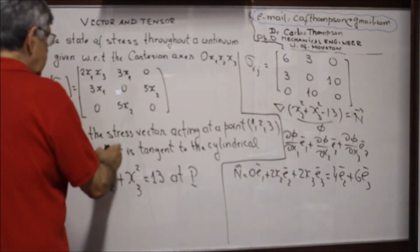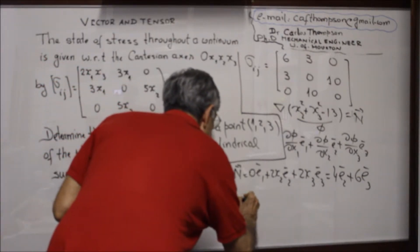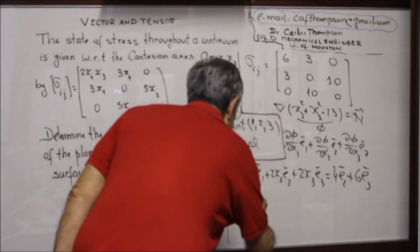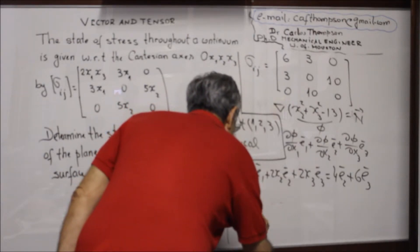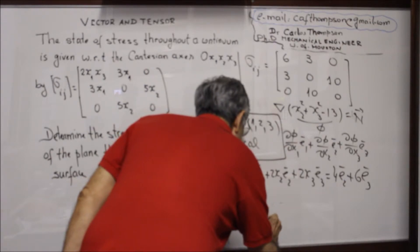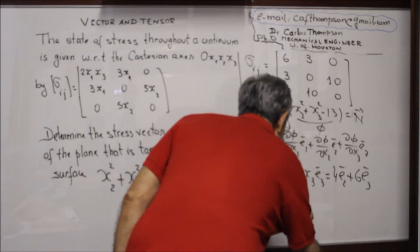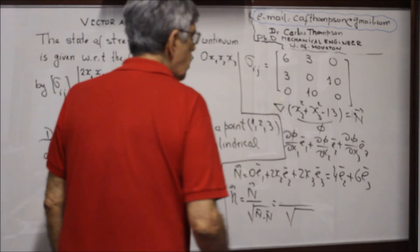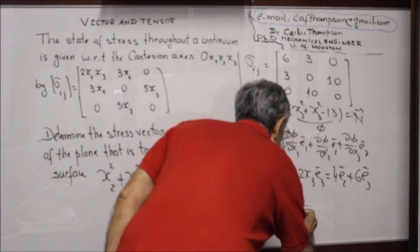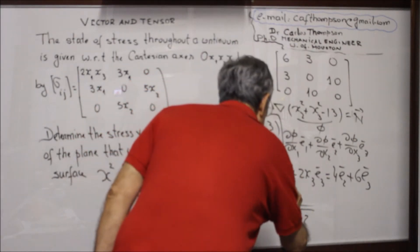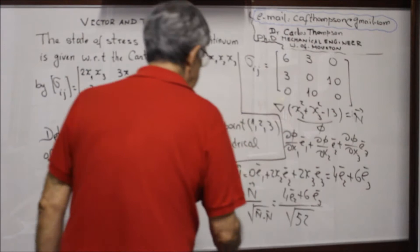To calculate the stress vector, we need the unit normal. The unit normal n̂ = n / √(n·n). Here n·n = 4² + 6² = 16 + 36 = 52. So n̂ = (4·E2 + 6·E3) / √52.